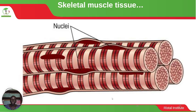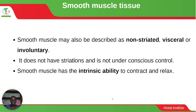Smooth muscle tissue may also be described as non-striated or involuntary. It does not have striations and is not under conscious control. With this type of muscle, it does not have the strips we looked at in striated muscles, and it acts involuntarily.